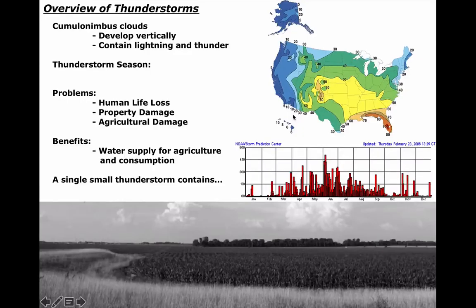So let's get a couple of the basics out of the way first. What do we call thunderstorms? Well, the cloud type is called a cumulonimbus cloud — this basically means Latin for 'heaping cloud.' These clouds develop vertically, which means they rise upward in the atmosphere, kind of like the small ones you see in this picture. All thunderstorms, just by nature, have lightning and thunder.